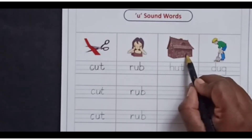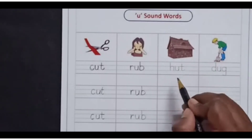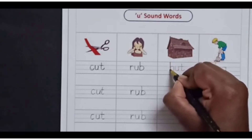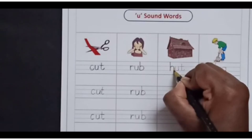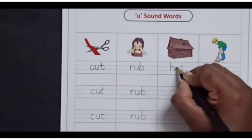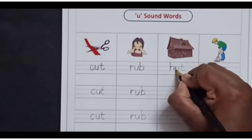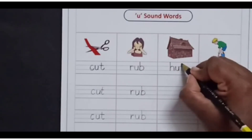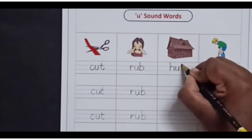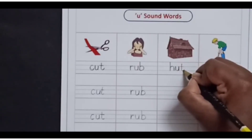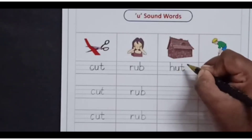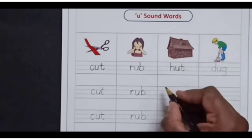This is a picture of a hut. H-U-T, hut. From the red line till the second blue line, make a standing line, go up till the first blue line, make a curve, come down till the second blue line — H. For U, standing line in between the two blue lines, curve, go up, come down — U. Leave some space from above, make a standing line till the second blue line, go a little bit up, and on the first blue line make a slipping line — T. H-U-T, hut.